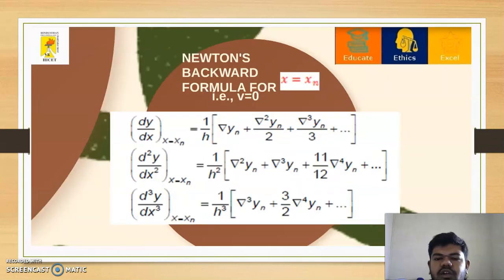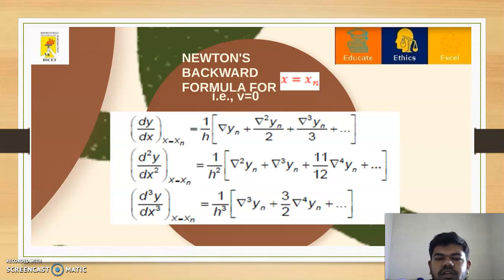Newton's backward formula for x equal to xn: when x = xn, v becomes 0. The first derivative becomes dy/dx = (1/h) [∇yₙ + ∇²yₙ/2 + ∇³yₙ/3 + ...]. The second derivative becomes (1/h²) [∇²yₙ + ∇³yₙ + (11/12)∇⁴yₙ + ...]. Similarly, the third derivative becomes (1/h³) [∇³yₙ + (3/2)∇⁴yₙ + ...].